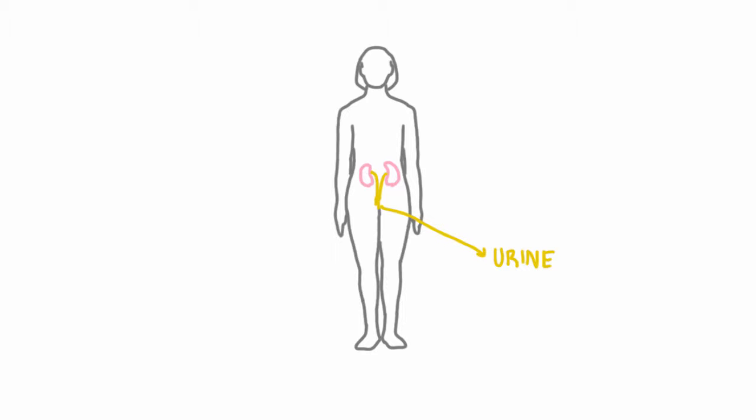If it's very dilute, if you're drinking tons of water, you might urinate out more, you might urinate out three liters, for instance. But the average would probably be about one and a half liters.